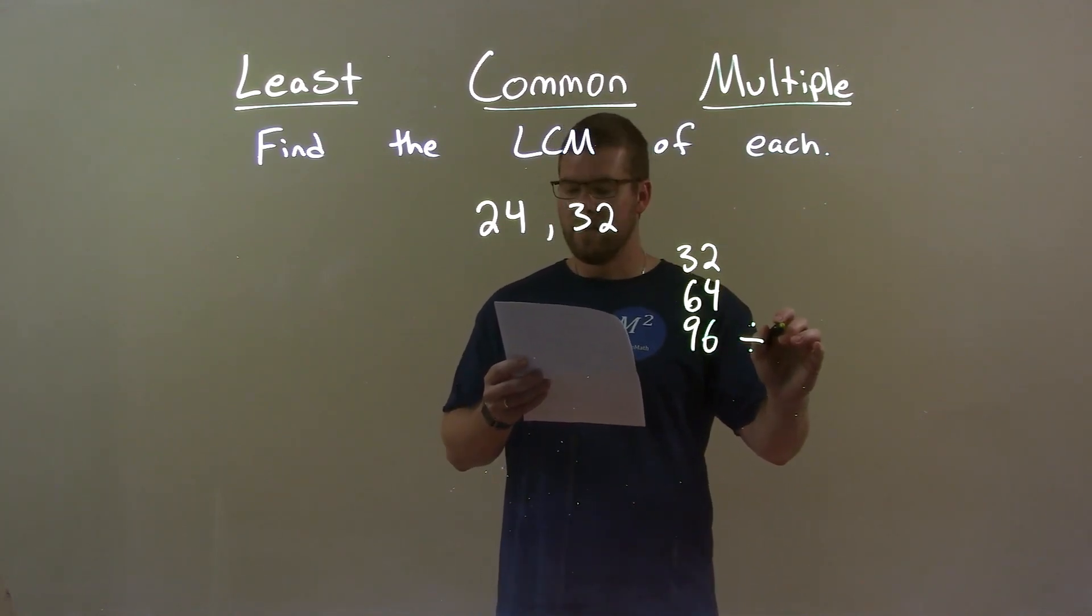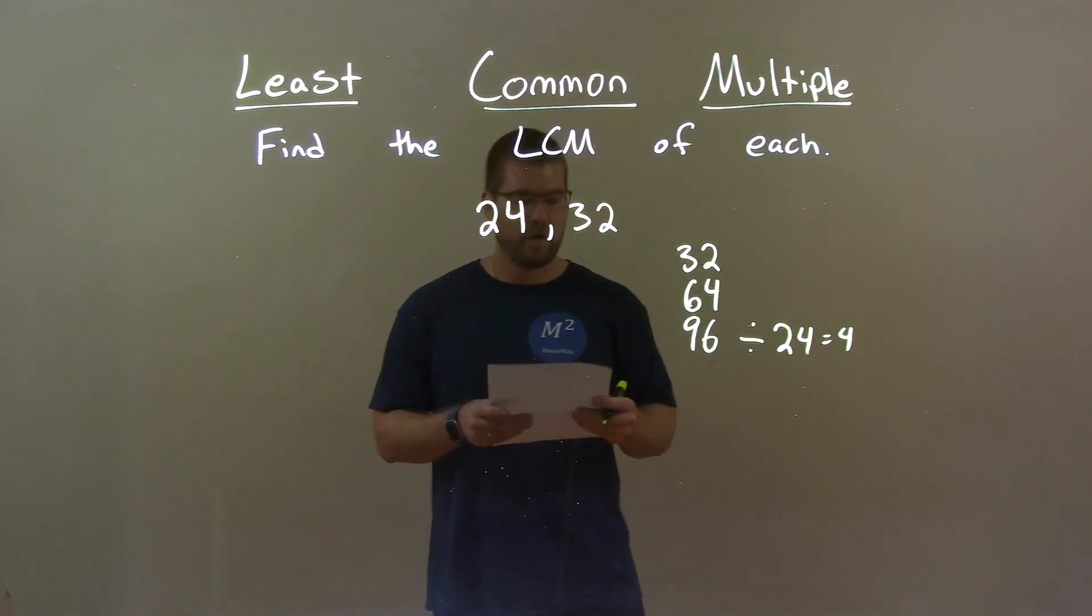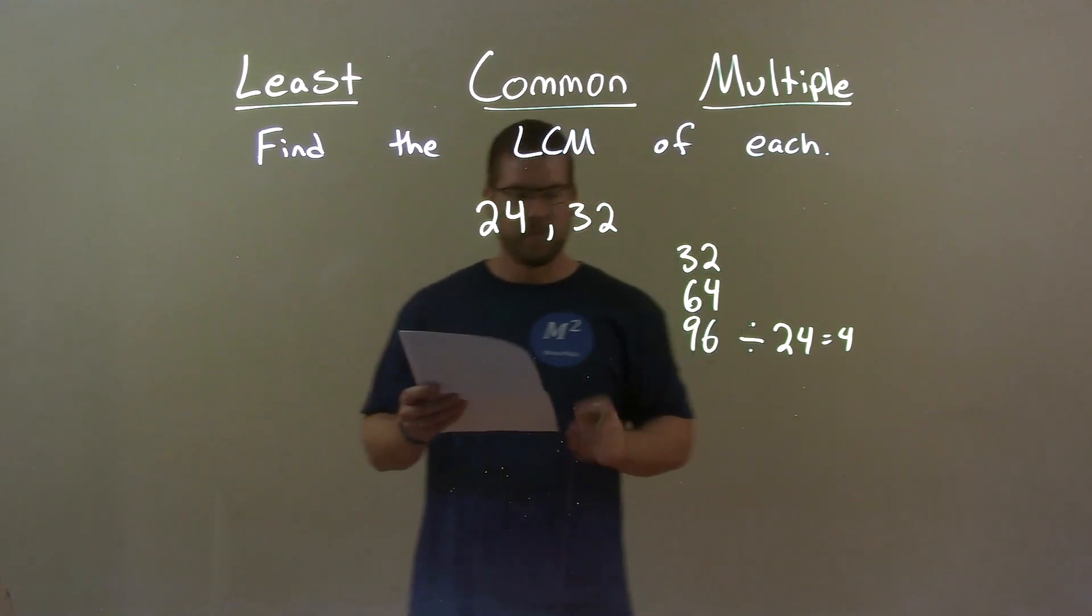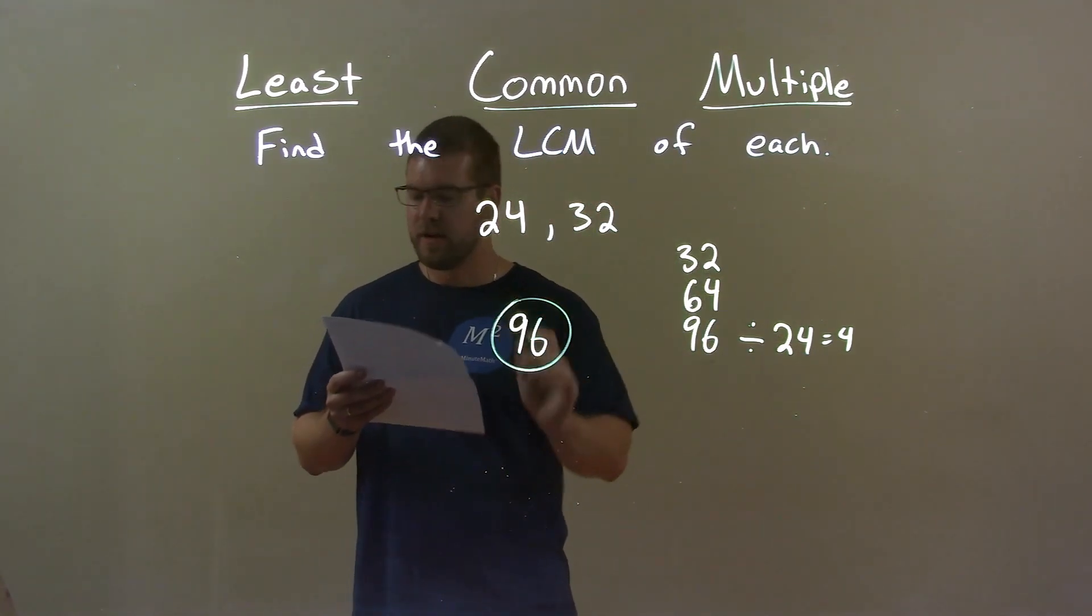96 can be divided by 24, and that's going to be 4 times. 96 divided by 24 is 4. So, 96 is my final answer.